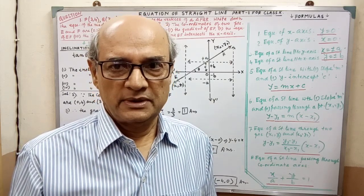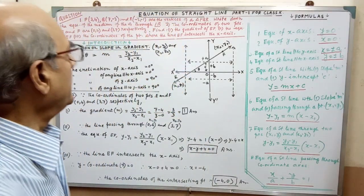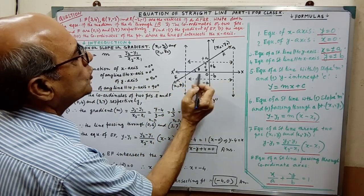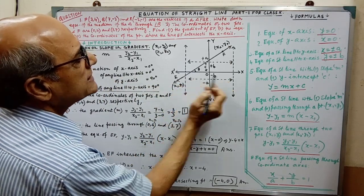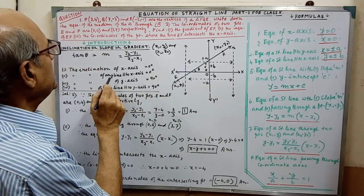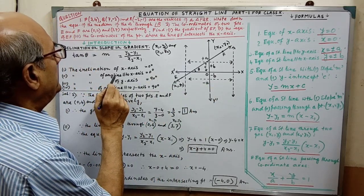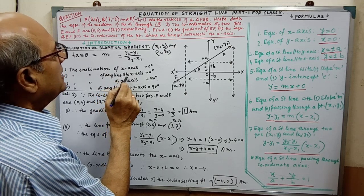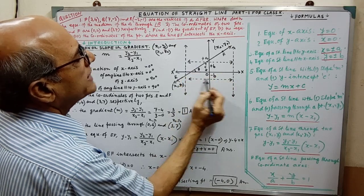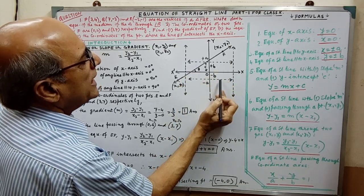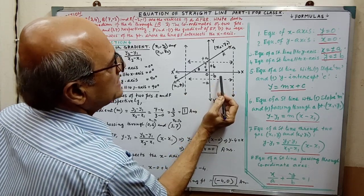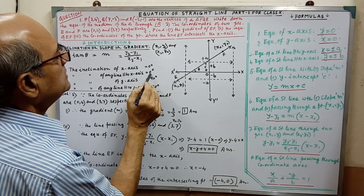These are the concepts you have to remember. The inclination of the x-axis is zero. The inclination of a line parallel to the x-axis — whether in the upward or downward direction — is also zero.